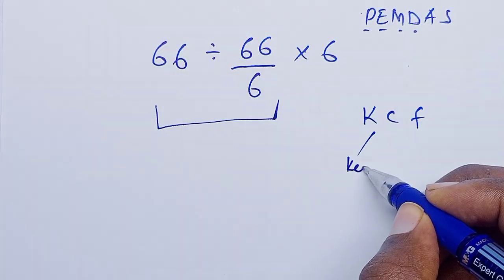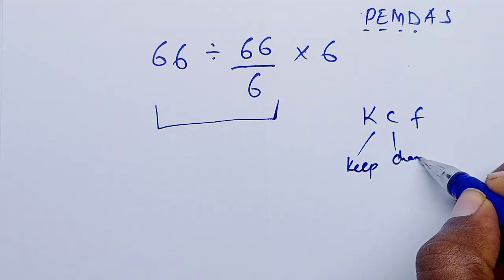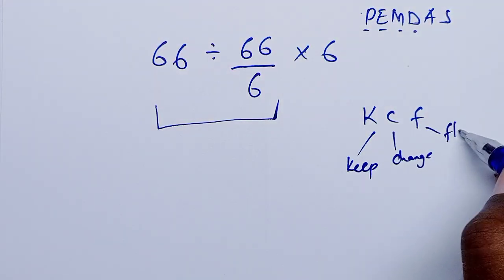Where K stands for keep - we keep the first value, then we change the sign, and then flip the last value.